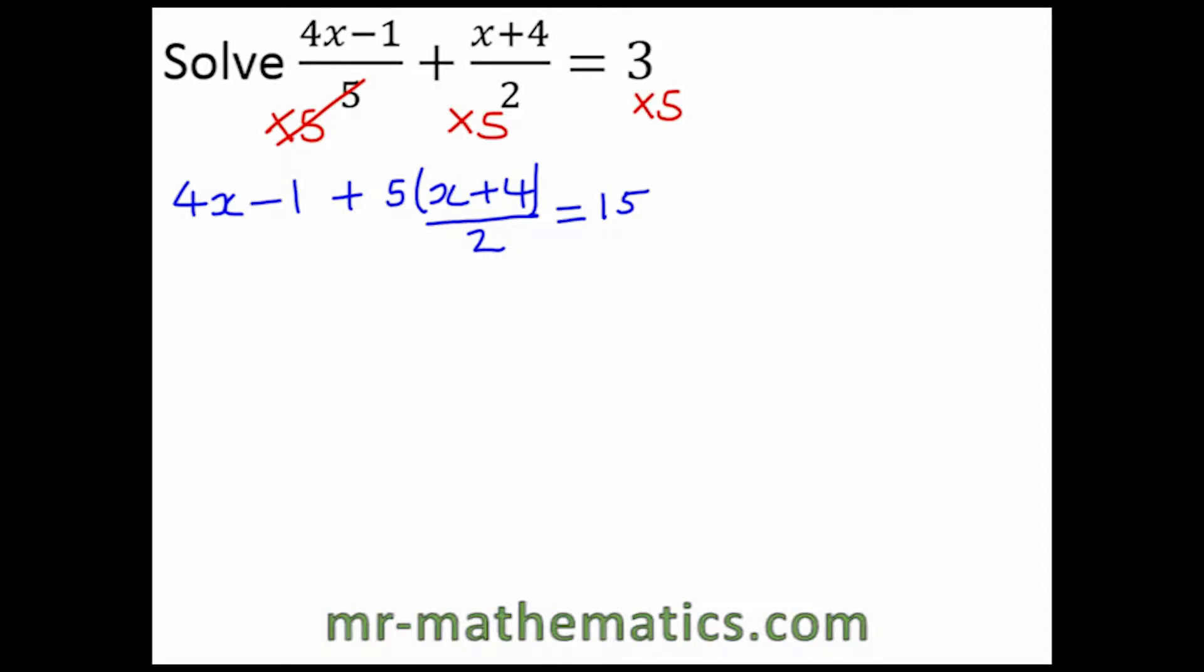Now we multiply every term by 2. The division and multiplication of 2 will cancel to make 1. So we have 2 lots of 4x minus 1 plus 5 lots of x plus 4, to make 15 times 2 which is 30.